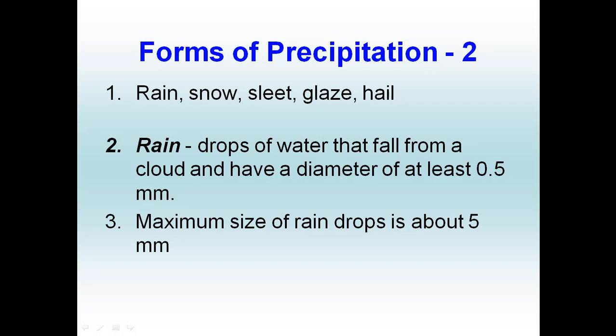In this video I want to talk about the different forms of precipitation and how they become different forms of precipitation. We all know rain and snow, but some people may not be that familiar with the differences between sleet, glaze (also known as freezing rain), and hail. Hail is a little bit more common, but how hail forms might seem a little bit foreign to you.